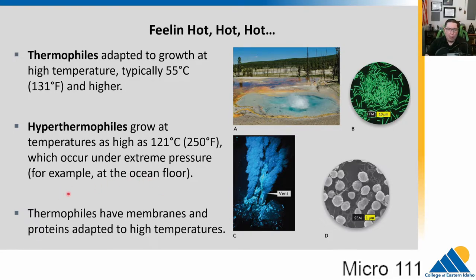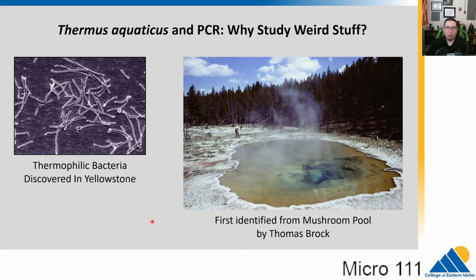Thermophiles have membrane proteins adapted to high temperatures. If you put your cells in there, they would fall apart because your membranes would become too flexible and your proteins would cook. Thermophiles have membranes, proteins, and enzymes fully adapted to these high temperatures. That's going to be critical because this is my favorite story. There's this organism from the mushroom pool in Yellowstone.